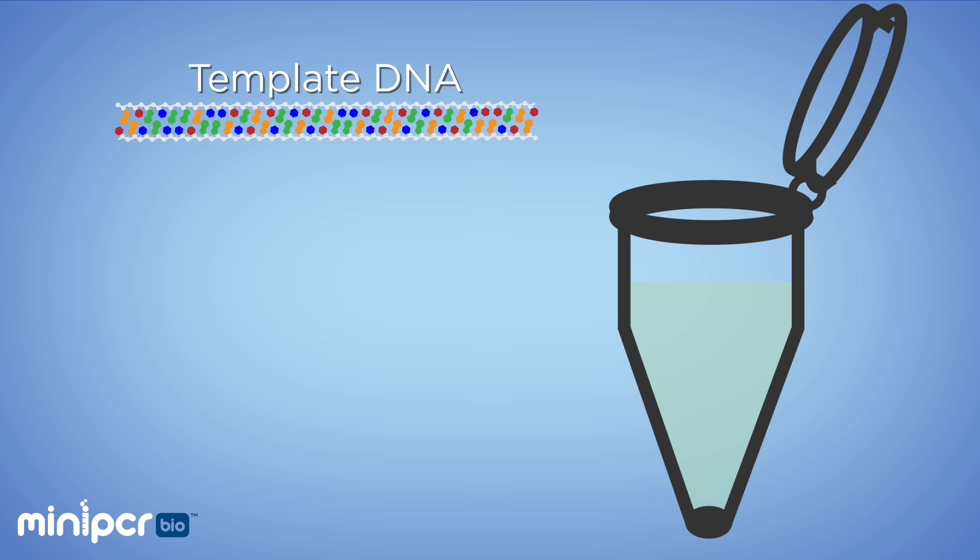For all of this copying to work, we need the exact right ingredients. So, let's take a closer look at exactly what we put into each tube. First, we need our DNA template. Remember that this template is often a part of a complex DNA sample. Depending on the experiment, this DNA could come from almost anywhere,